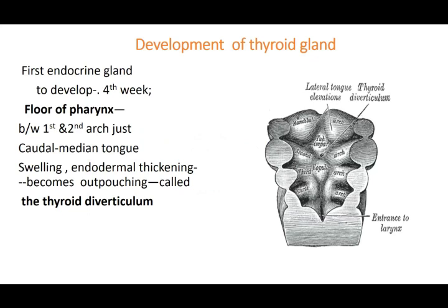Looking at the floor of the pharynx — with the first arch mandibular, second arch, and third arch — in front was the tuberculum impar, and behind the foramen cecum was the copula. The first to develop, in the fourth week, is in the floor of the pharynx between the first and second arches, just caudal to the median tongue swelling. A small endodermal thickening becomes an out-pocketing called the thyroid diverticulum, starting at the foramen cecum and extending downward.